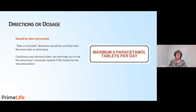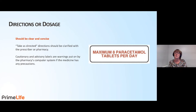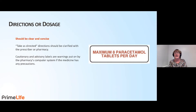The directions or dosage, as we said previously, should be clear and concise. 'Take as directed' directions should be clarified with the prescriber or the pharmacy. However, some medications like insulin and warfarin can be labelled 'as directed', as doses can often be variable and change depending on blood tests. Cautionary and advisory labels are warnings put on by the pharmacist computer system if the medication has any precautions, and it's really important that we take heed of these and administer them to our residents as prescribed.